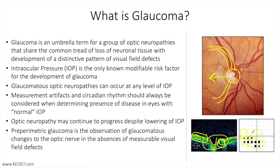We treat glaucoma with drops that decrease fluid production, like beta blockers and carbonic anhydrase inhibitors, or increase outflow of fluid from the eye, like prostaglandin analogs and rho-kinase inhibitors. Our goal with treatment is to decrease pressure roughly by 25-30% from baseline as a simple rule. Lasers can be used to increase outflow like laser trabeculoplasty, including selective laser trabeculoplasty, or SLT, or we can decrease inflow using cyclophotocoagulation or the more recently introduced micropulse cyclophotocoagulation.